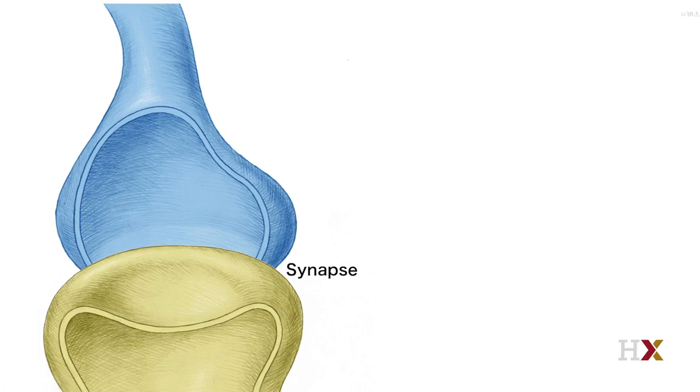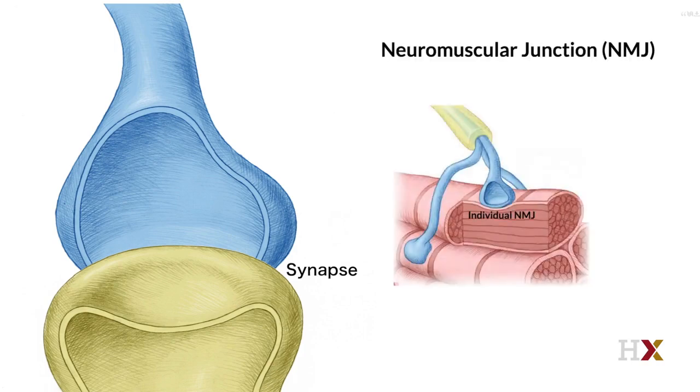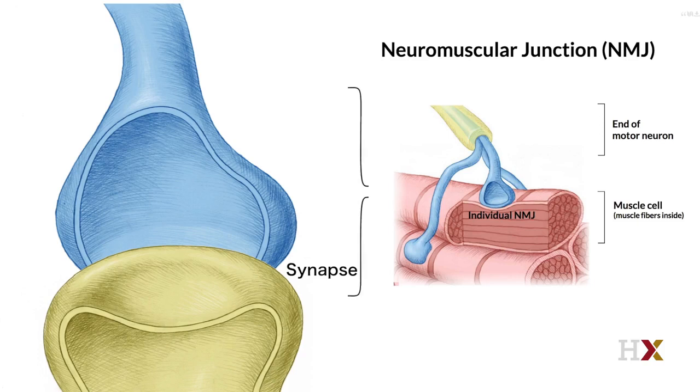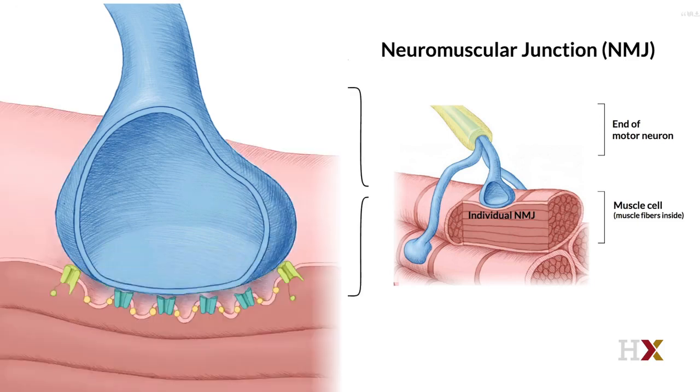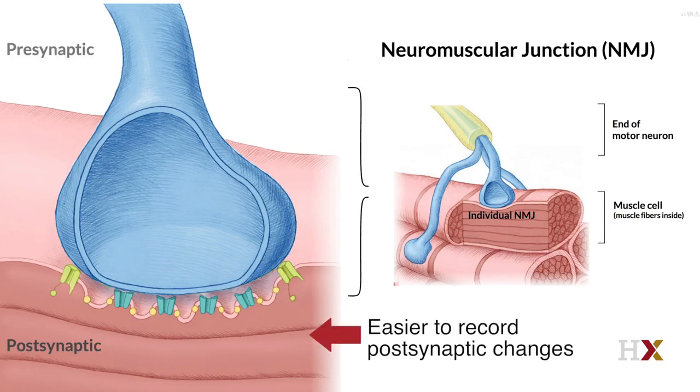Rather than studying the synapse between two neurons, Katz chose to study the neuromuscular junction, or NMJ, the place where a nerve attaches to a muscle. The NMJ has many features that are similar to the synapse in the central nervous system, with the added benefit that a muscle fiber is a lot easier to record from using simple electrodes.